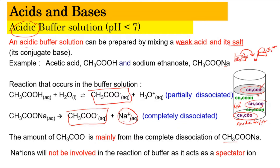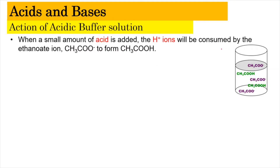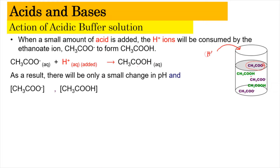Now let's look at the action of the acidic buffer. When a small amount of acid is added, the H⁺ is consumed by the ethanoate ion (CH3COO⁻), producing CH3COOH. As a result, there is only a small change in pH. The concentration of the ethanoate ion decreases, while the concentration of the ethanoic acid increases. Because of these properties, only a slight change in pH occurs.